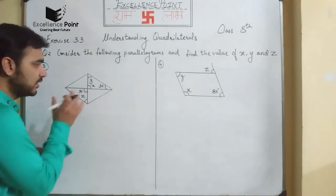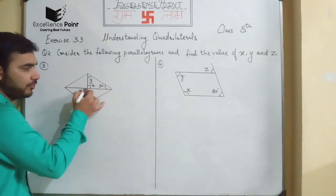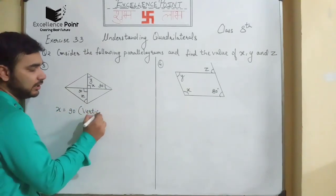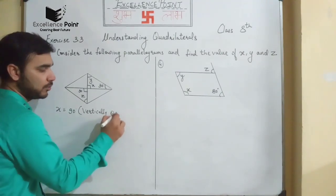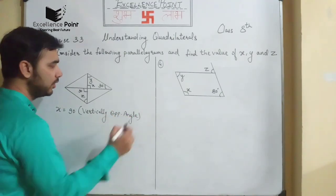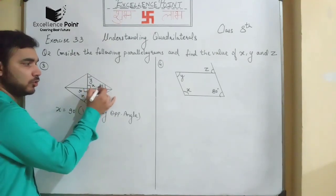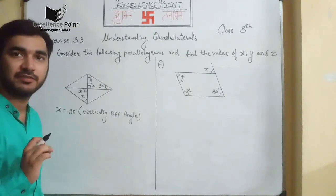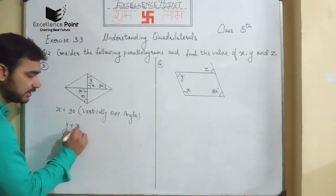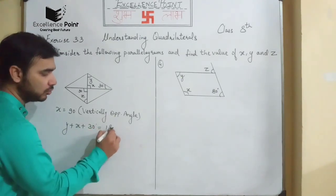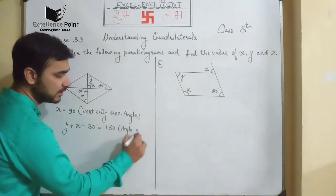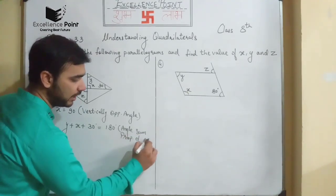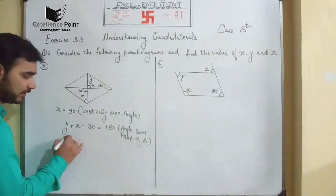For the third diagram, just see carefully — the value of X should be equal to 90 degrees because it is a vertically opposite angle. Now X is known as 90 degrees and 30 degrees is also known, so by applying the angle sum property of a triangle we can find the value of Y. So Y plus X plus 30 degrees should be equal to 180 degrees.